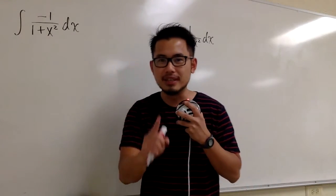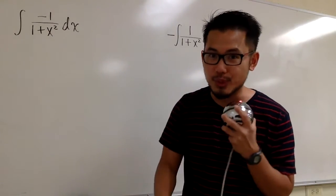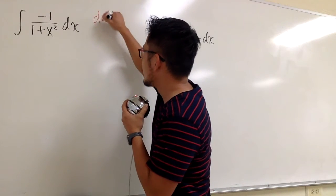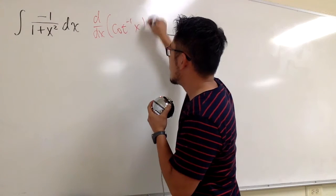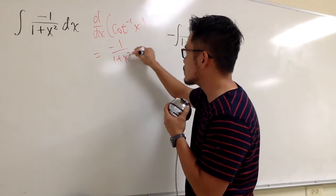And then for this one, it's actually pretty easy because I know my derivative table really well. And I know that, let me write this down right here for you guys, when I take the derivative of inverse cotangent x, I will get negative 1 over 1 plus x squared.